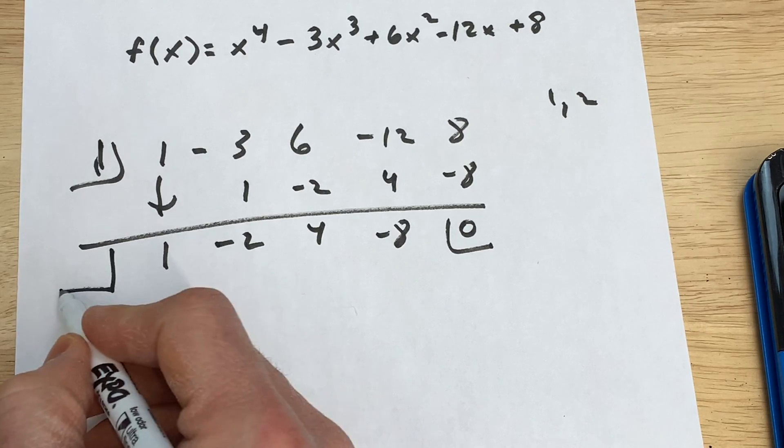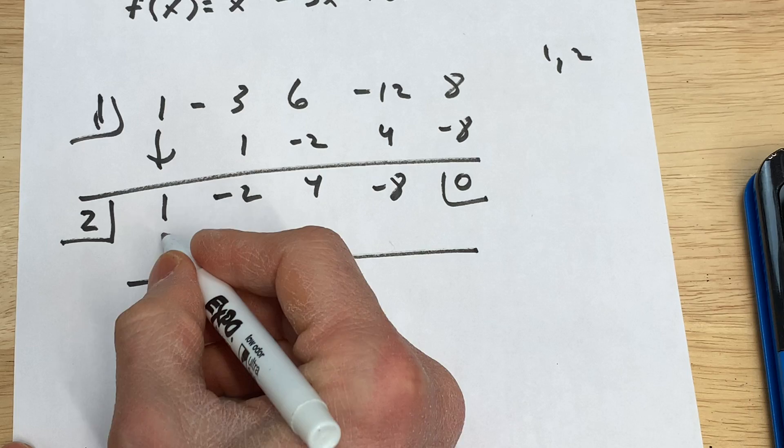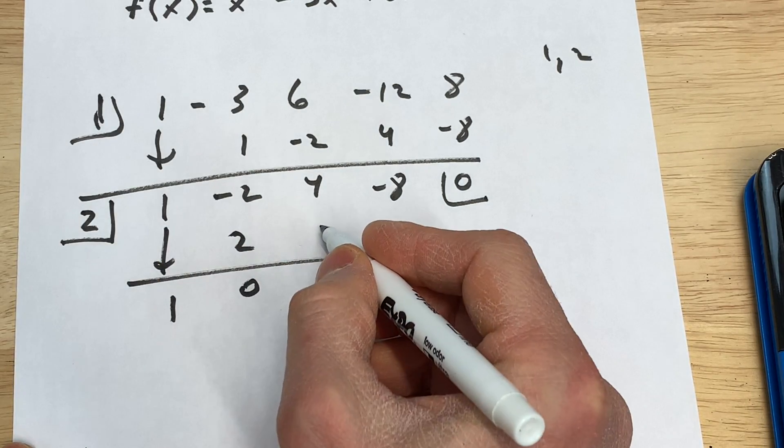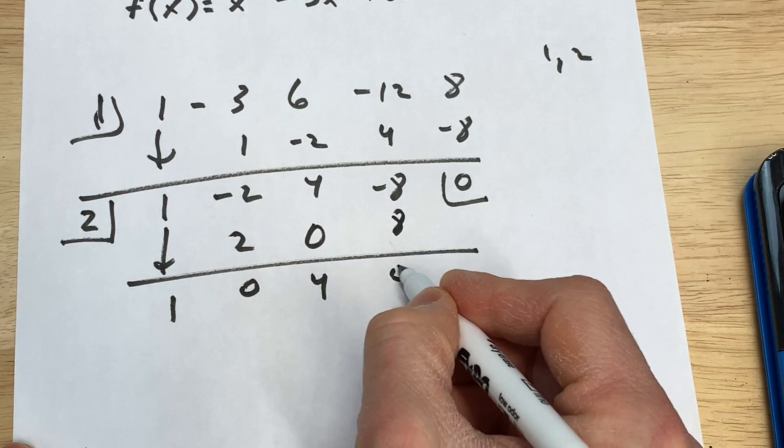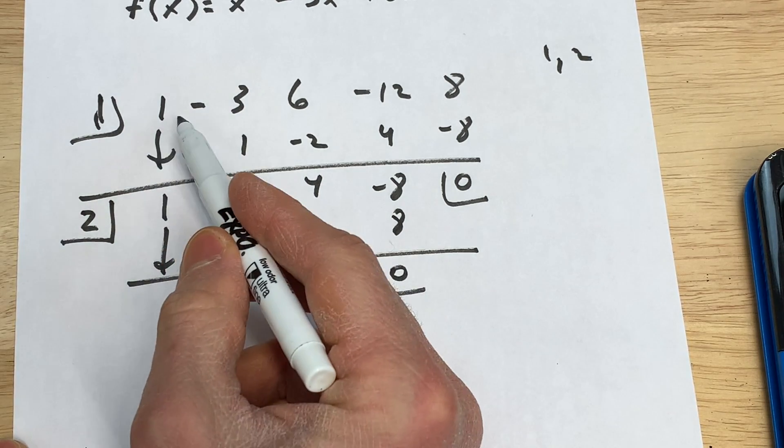And what we can do now, we also know that 2 is a zero. Let's go ahead and do synthetic division with 2. So what we can do is we can, again, bring down that first term. Multiply on the diagonal, add straight down. Multiply on the diagonal, add straight down. Multiply on the diagonal, add straight down. Now you see how we're getting zero again so we know that two is a zero.